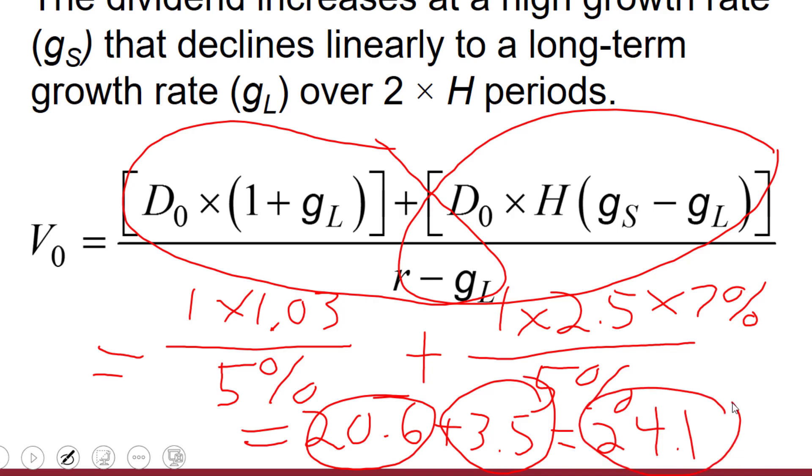So this is a very realistic example in the sense that dividend increases, they don't just hit a brick wall and go from a high rate to a low rate. They tend to decline over time. So it's very realistic. And in order to implement this, you need an approach that basically handles a complication, handles that linear decline in the growth rate. And that's the H model.